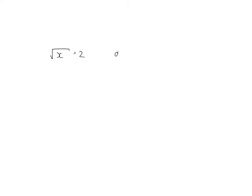Before we look at square root equations, I'm going to point out the difference between an equation where we already have the root given to us and where we are going to add our own square root. On the left, there's already a root from the beginning, which implies it's only the positive root. So to get rid of the square root, I'm going to square both sides, and I will have x equals 4.